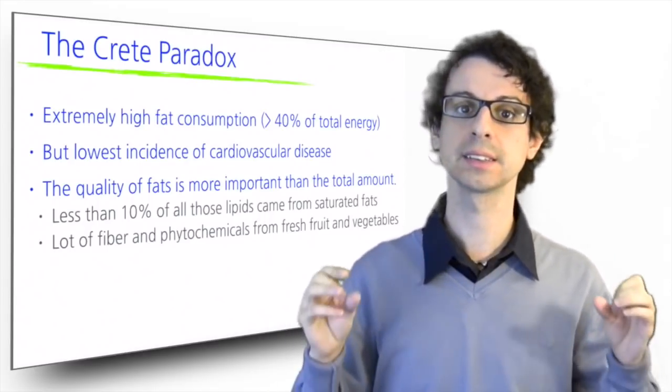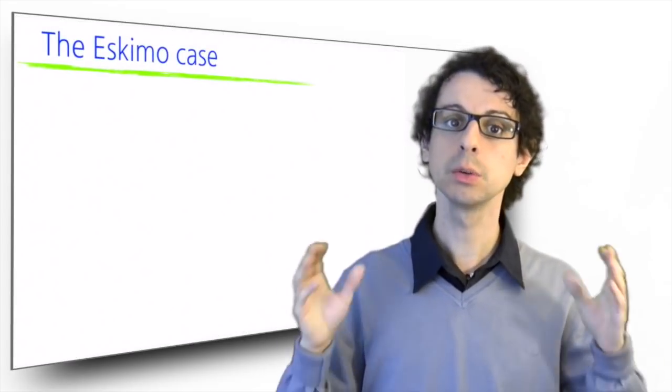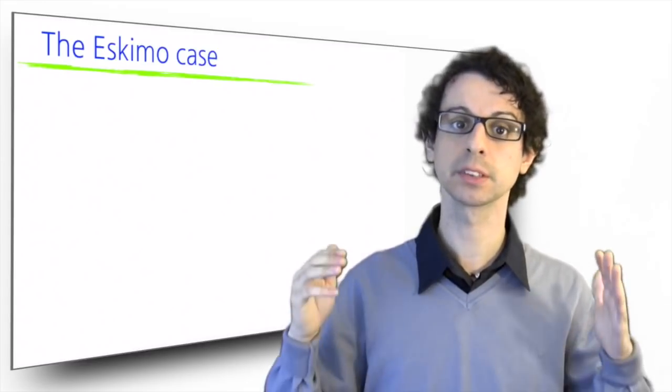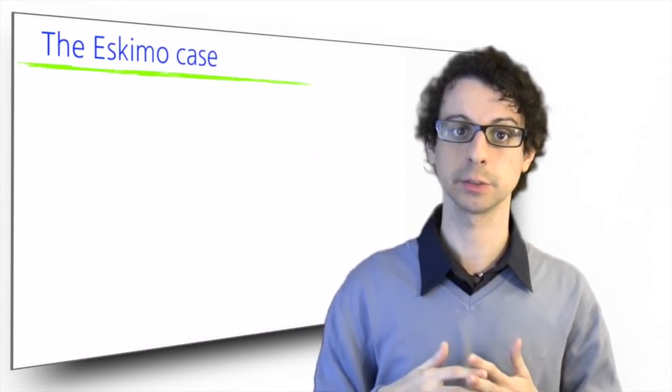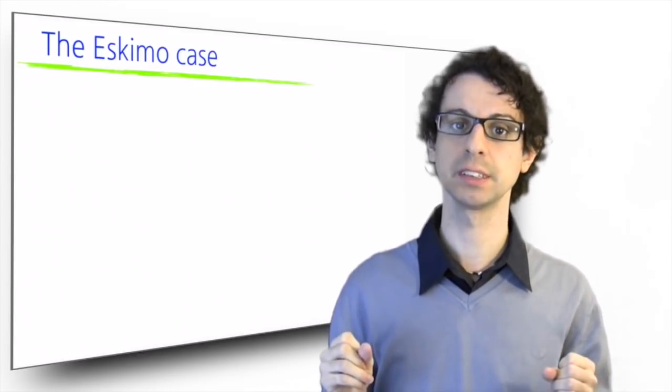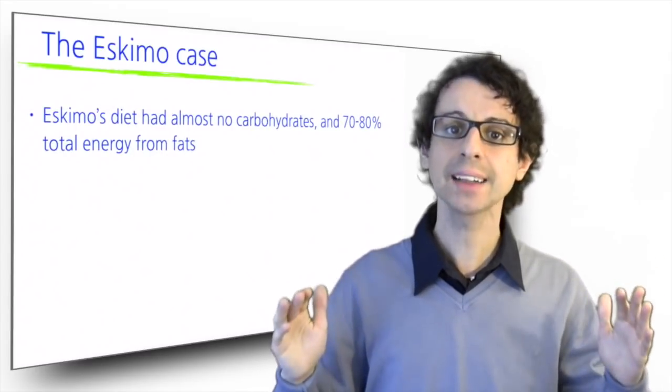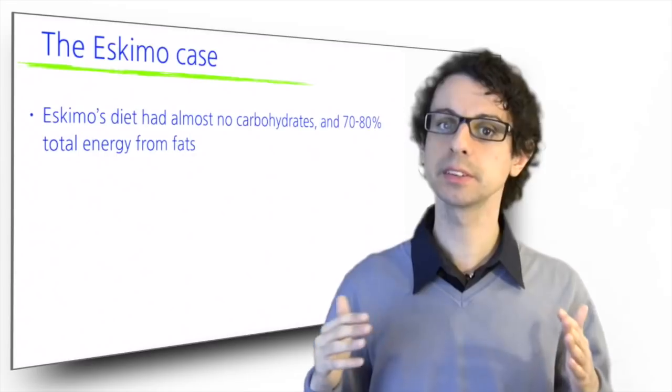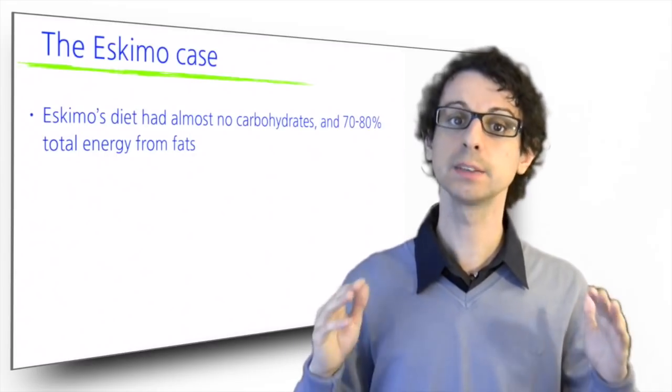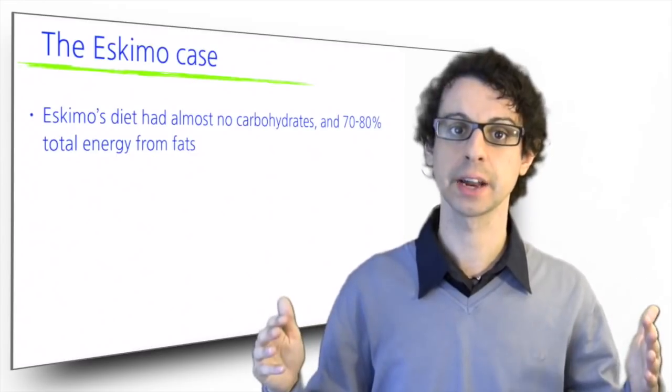An early, widely documented case in scientific literature was a study on the Eskimo population, which was conducted in the 1920s by the explorers Wilhelm Stephenson and Kasten Anderson. During their expedition, they were extremely impressed by the Eskimos diet. It was basically devoid of carbohydrates, with fats contributing 70 to 80% of the energy intake. Especially in winter time, when they mostly ate fat, fatty fish and caribou meat.